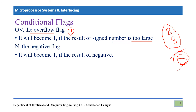The N flag is also related to signed numbers — specifically, the sign of the last result. If we perform any arithmetic or logical operation and the result is negative, the N flag becomes 1. If the last result is positive, N remains 0. So N flag indicates the sign of the result.